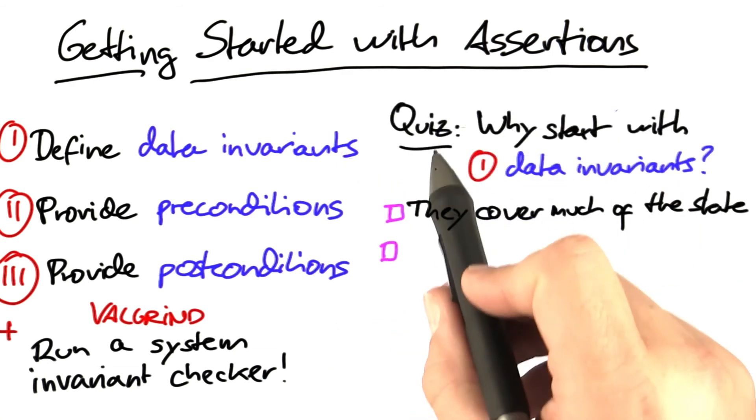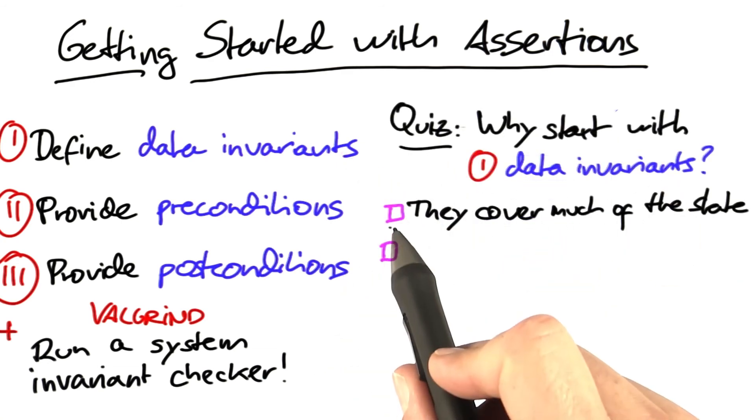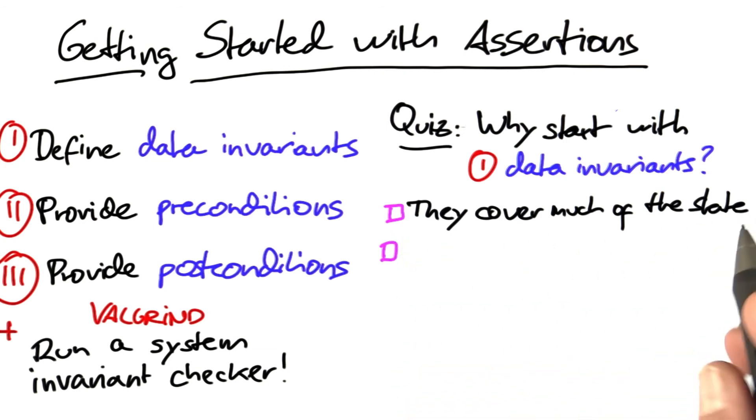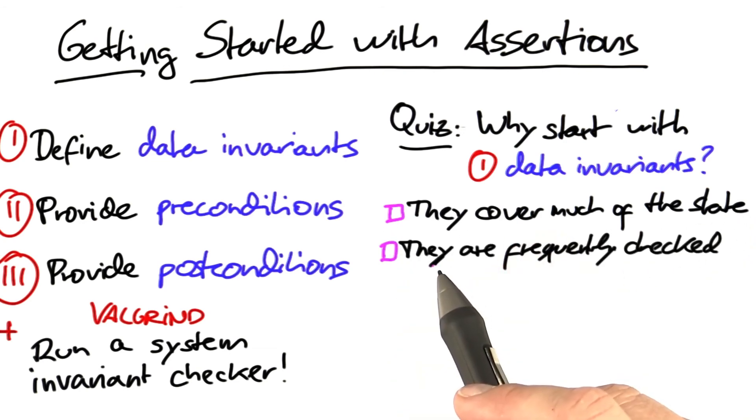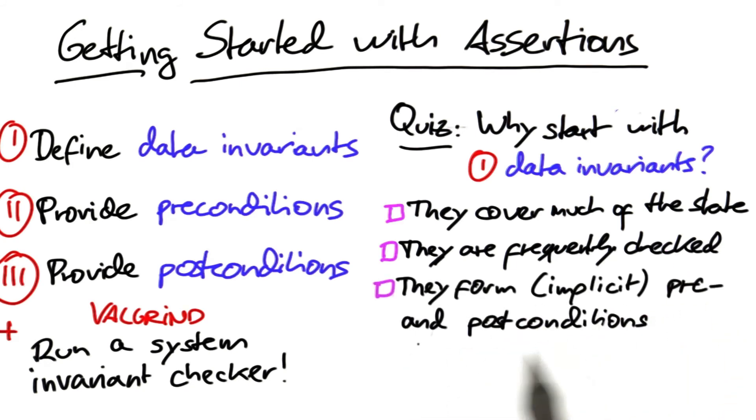Why should we start with data invariants? This is the quiz. First option, they cover much of the state. Second option, they are frequently checked. They form implicit pre and post conditions, because data invariants should hold at the beginning and at the end of each public method.